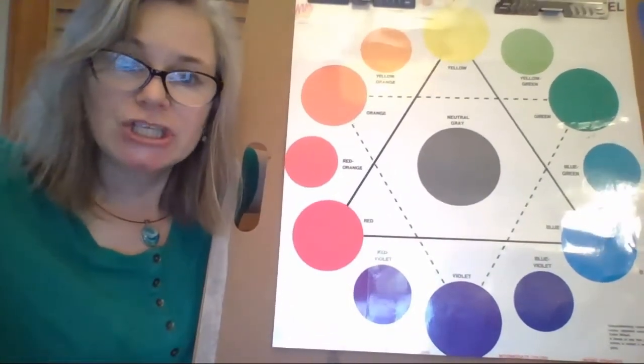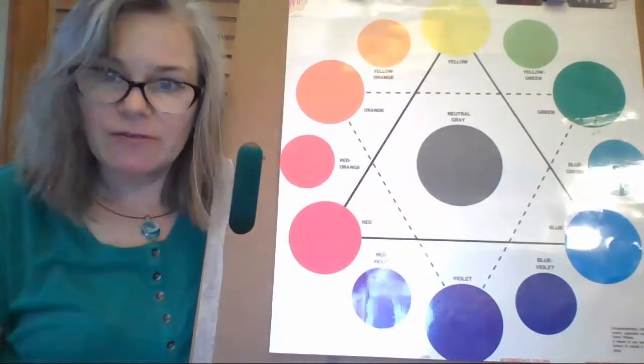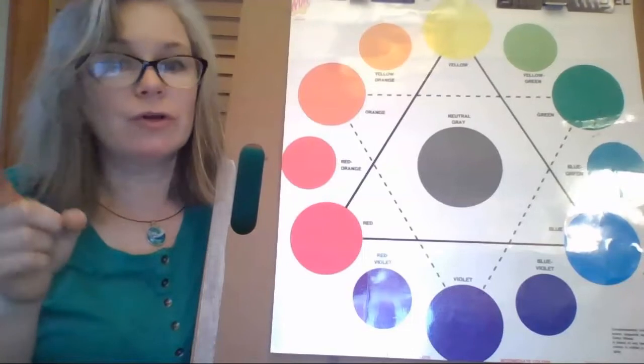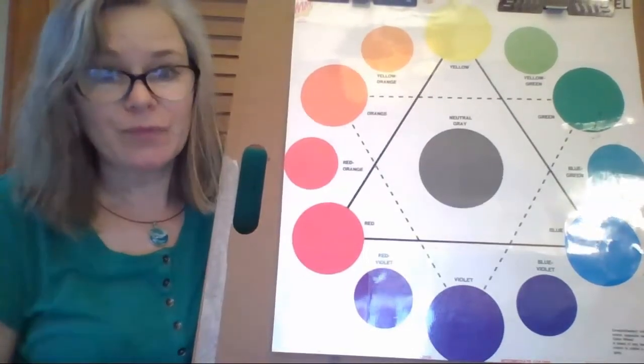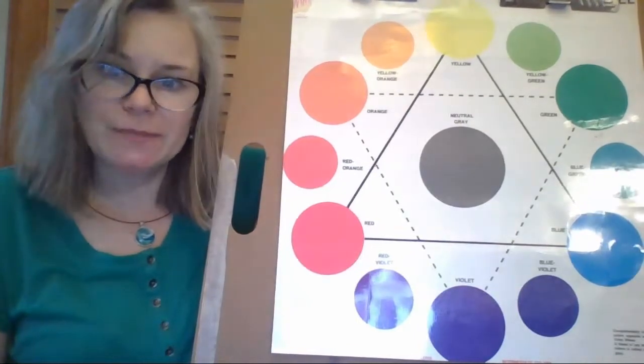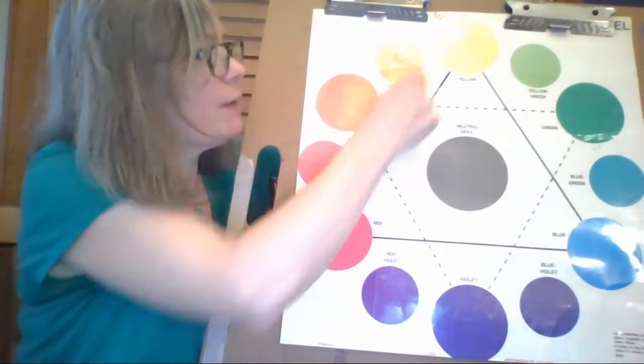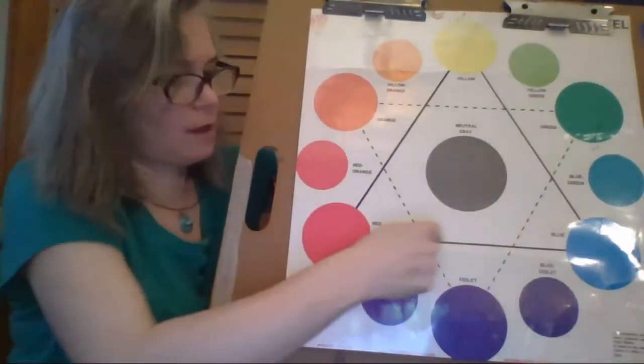Do you see any shapes on the color wheel? If you were thinking circles and triangles, you're right. The colors are circle shapes and then the primary colors make a triangle.